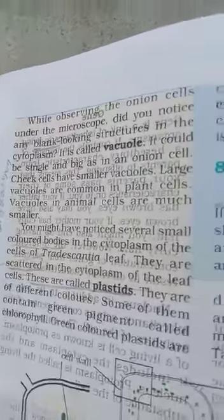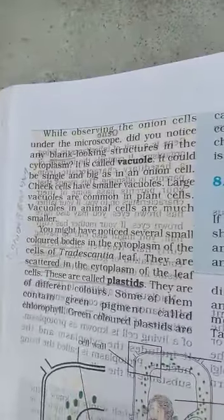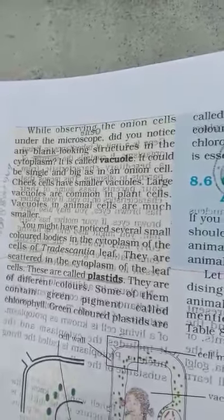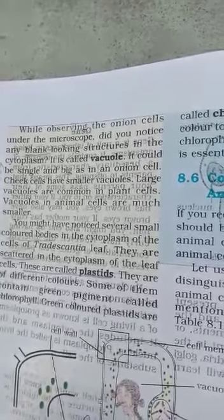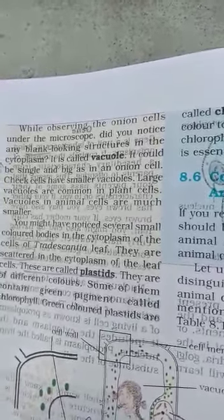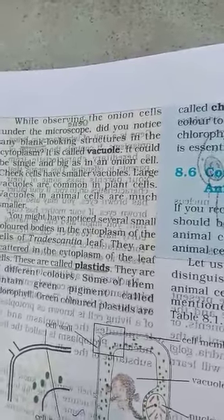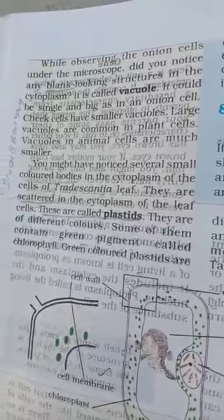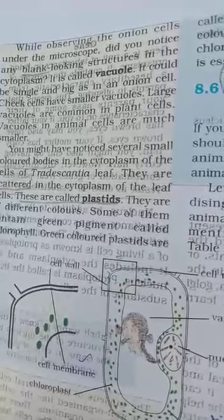We already discussed an activity where we observed onion cells under the microscope. We noticed a blank-looking structure in the cytoplasm — that structure is called a vacuole. In onion cells, the vacuole can be single and large.